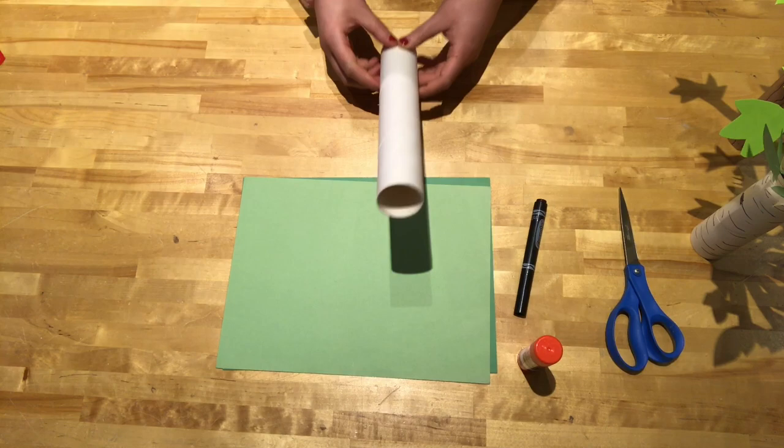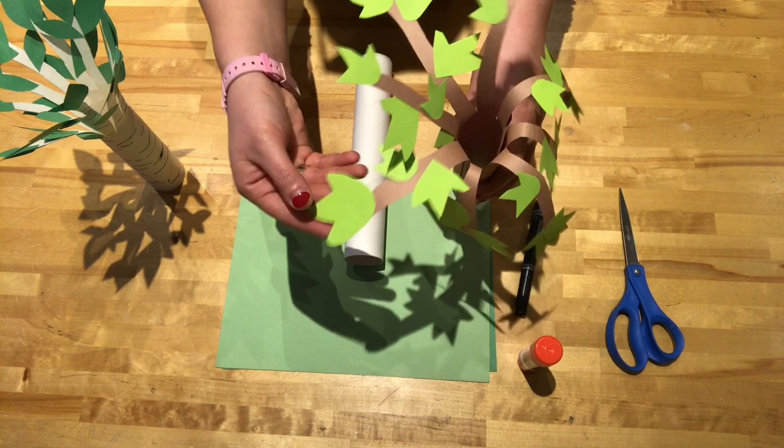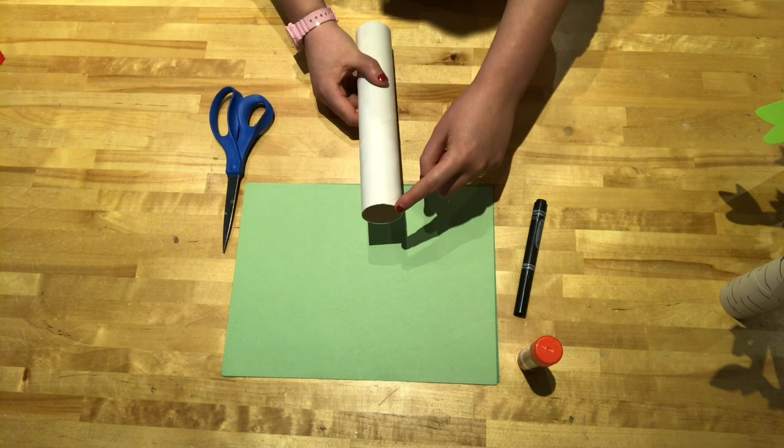This project is fairly simple. I need a paper towel tube that we're going to be recycling. Sometimes you've got white ones, sometimes you've got brown ones. I like the different colors because this one looks like a birch tree. This one's a maple tree. You can tell by the leaf shape I did. I'm going to make this one into a willow tree.